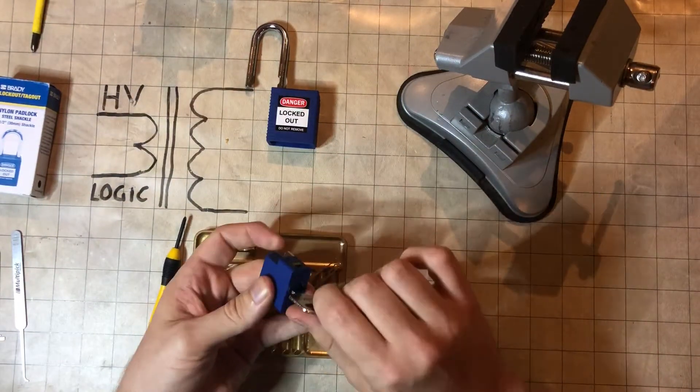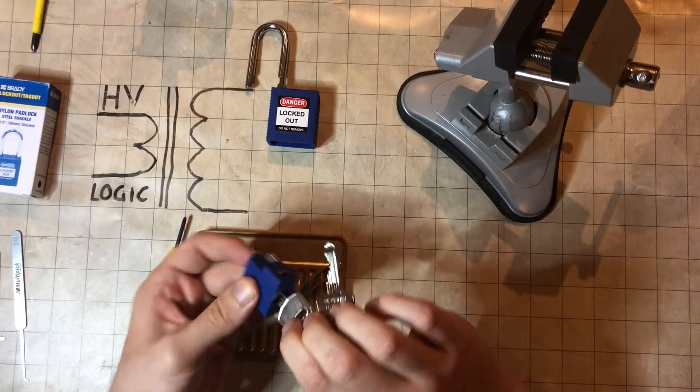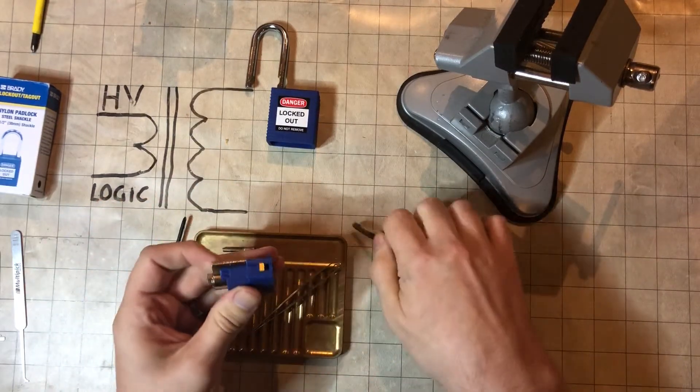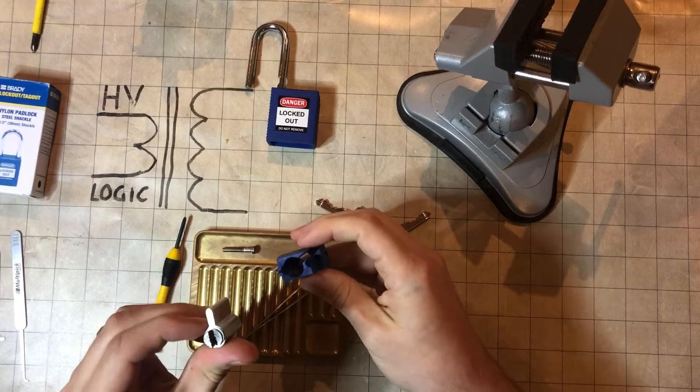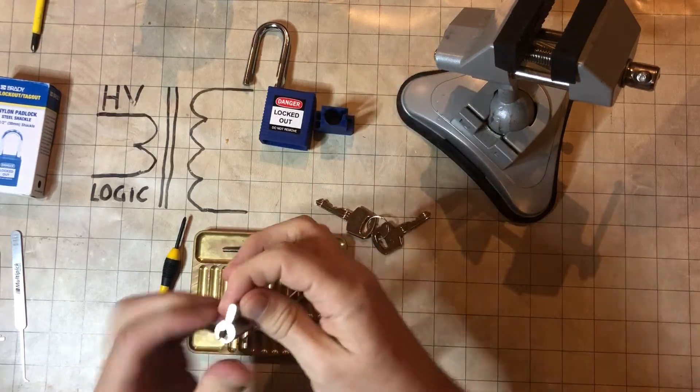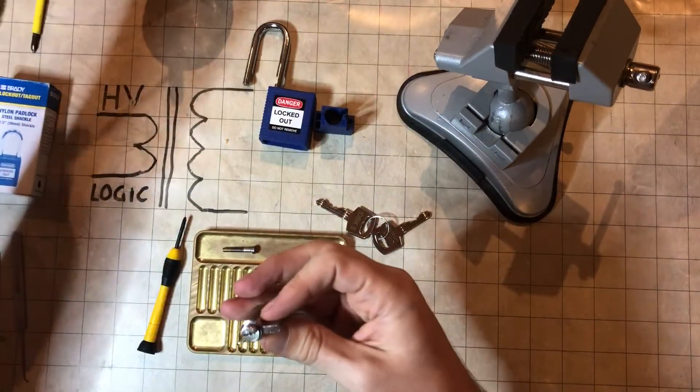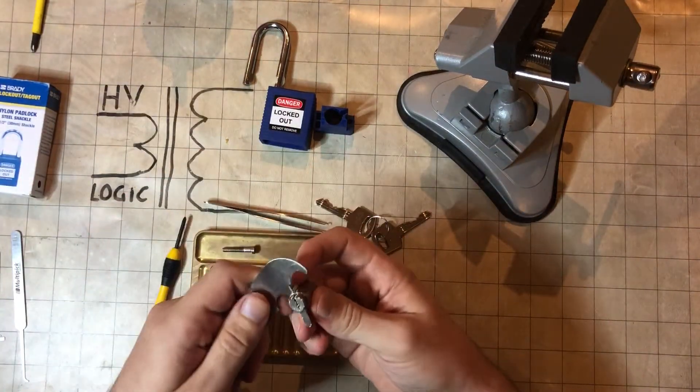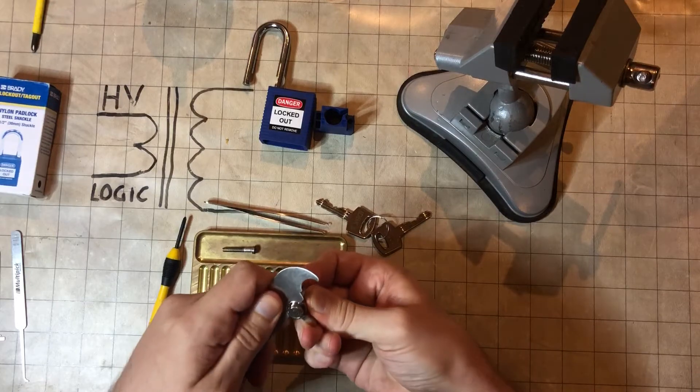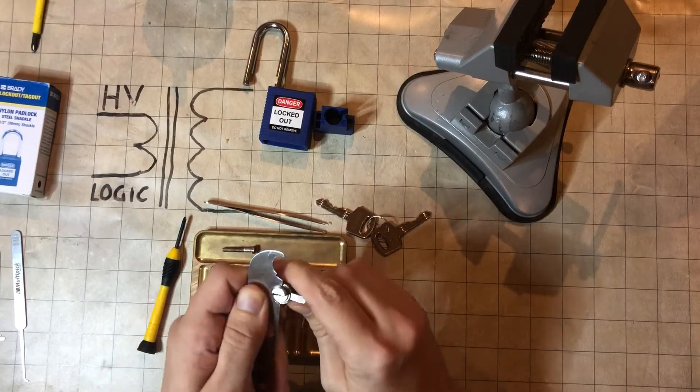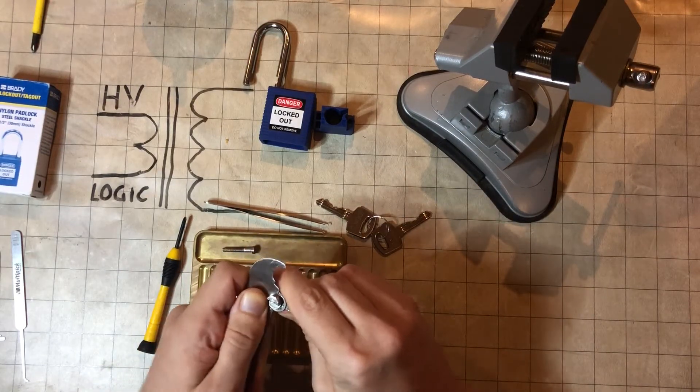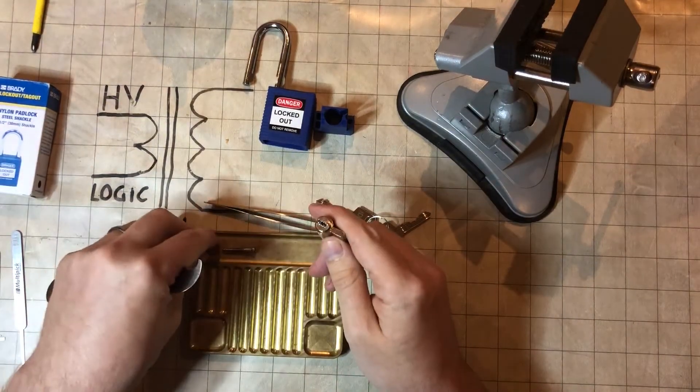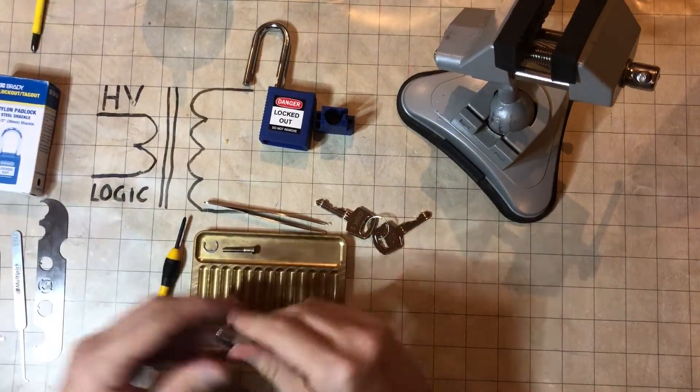Alright, now we'll have to unlock that to get the core out. Yep. Okay. C-clip on the back. These little tiny ones. Whoops, that went clinging off into oblivion, but thankfully it only hit my shirt and didn't go the other direction.